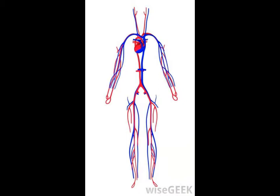For example, the presence of a radial pulse, or the pulse felt at the wrist, confirms that there is blood flow to the hands.